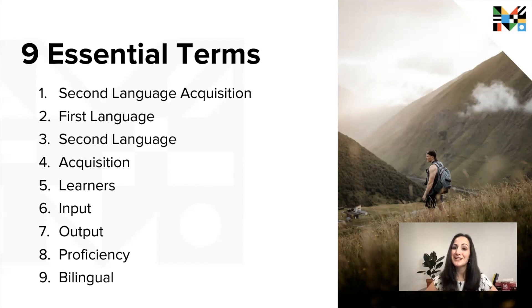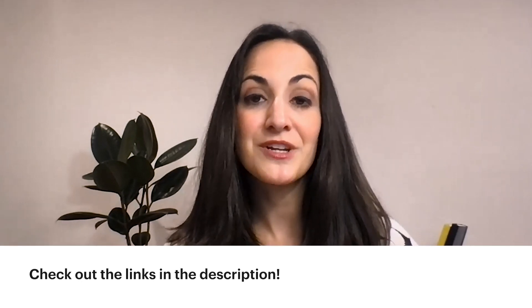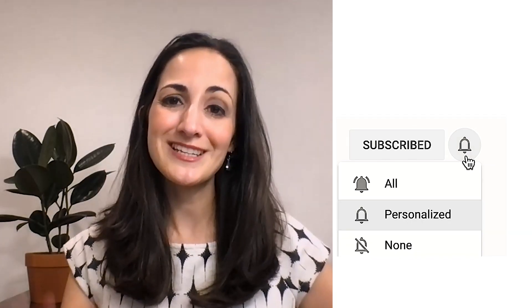Well, there you have it — your top nine essential terms to get you started on your second language acquisition journey. We defined second language acquisition in two ways and broke down its component parts by clarifying the differences between first and second languages and the synonymity of acquisition and learning. We talked about learners and the input and output that is so crucial to developing second language proficiency. Finally, we covered the nuanced relationships between SLA and one of its most closely related fields, bilingualism. If you want some help remembering the terms covered today, check out the link in the description for printable flashcards. We also created a version compatible with online flashcard tools like Quizlet. If you want to stay in the loop on all of our amazing videos about languages and linguistics, hit the subscribe button. Thanks for watching and I'll see you next time!